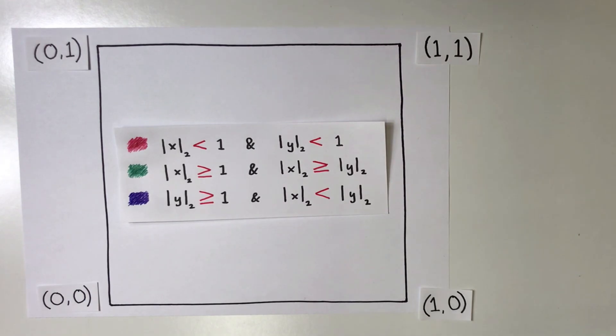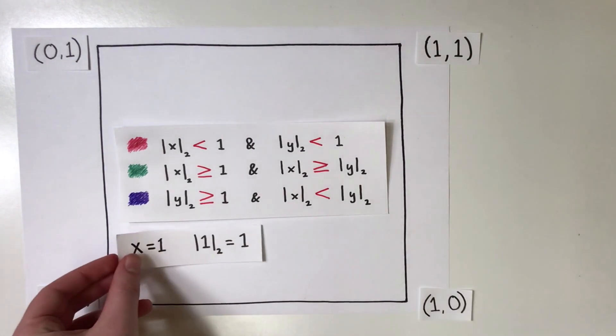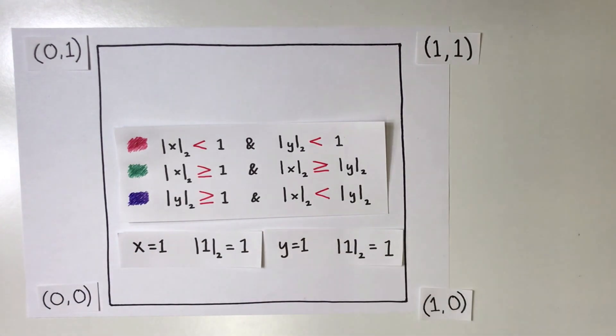If we take a good look at this vertex, we see that the 2-adic valuation of x is 1, and the 2-adic valuation of y is also 1. So, this satisfies the inequalities here. We can conclude that this vertex is green.